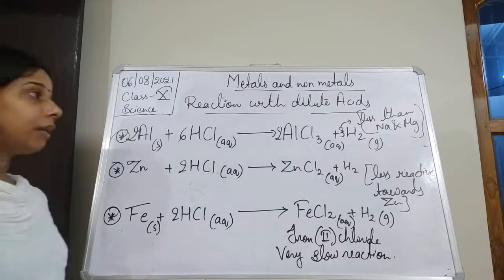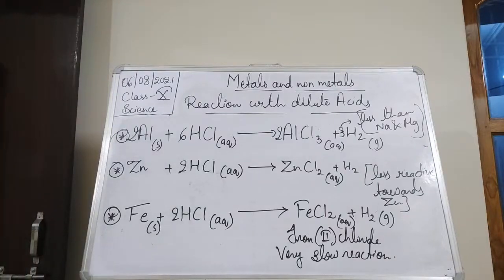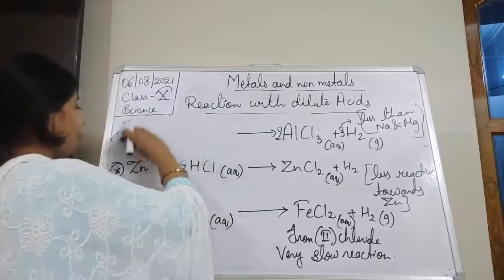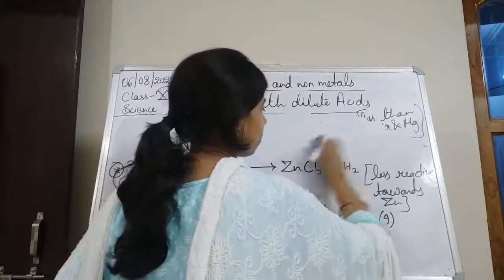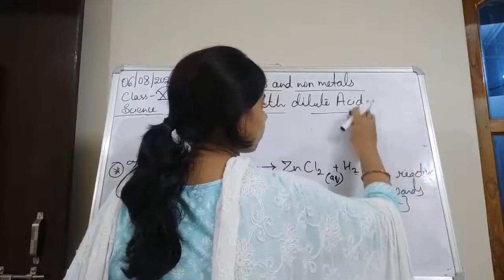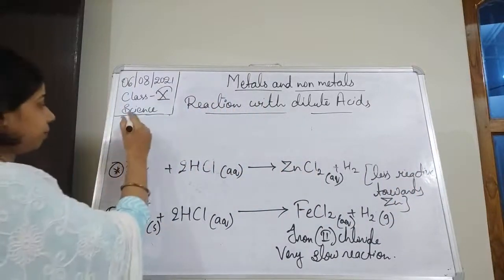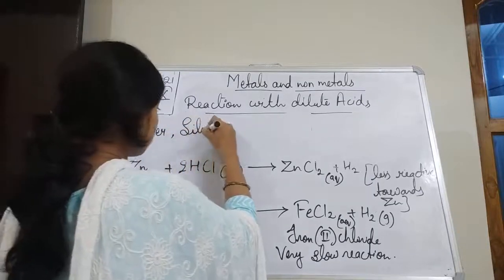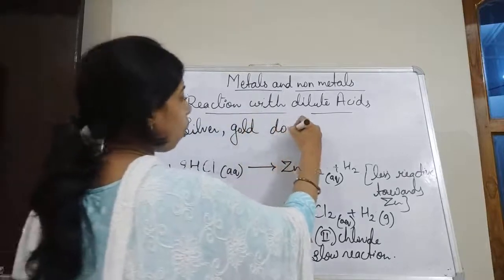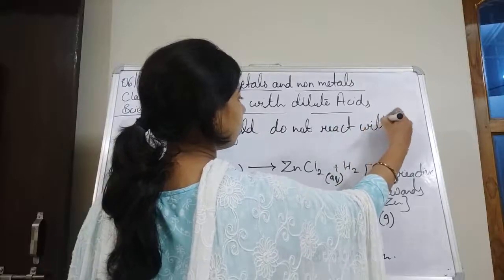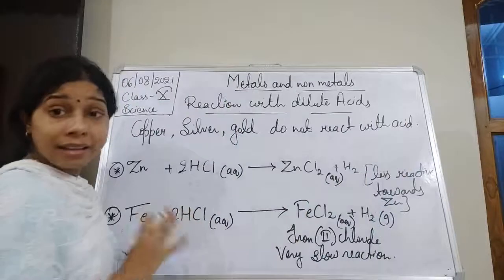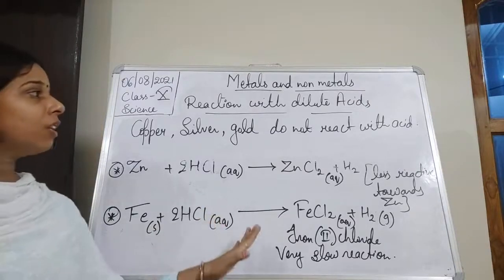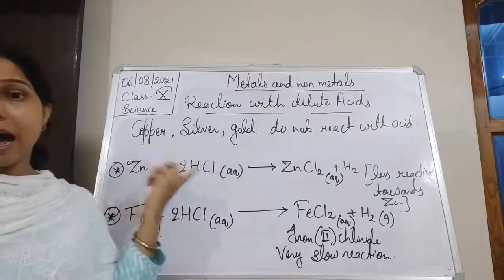There are metals which are not reactive at all with acid — like copper, silver, and gold. These metals do not show very slow reaction; they simply do not react with acid at all. This is how the reaction occurs between metals and hydrochloric acid.